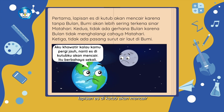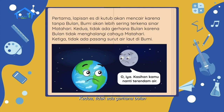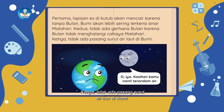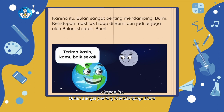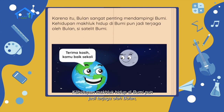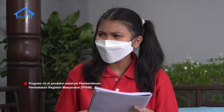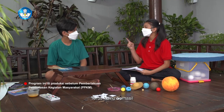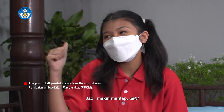'Pertama, lapisan es di kutub akan mencair karena tanpa bulan bumi akan lebih sering terkena sinar matahari. Kedua, tidak ada gerhana bulan karena bulan tidak menghalangi cahaya matahari. Ketiga, tidak ada pasang surut air laut di bumi. Karena itu, bulan sangat penting mendampingi bumi. Kehidupan makhluk hidup di bumi pun jadi terjaga oleh bulan, si satelit bumi.' Bagus! Karanganmu menarik sekali. Kamu berhasil memasukkan kalimat majemuk setara berlawanan dengan benar. Jadi makin mantap deh!